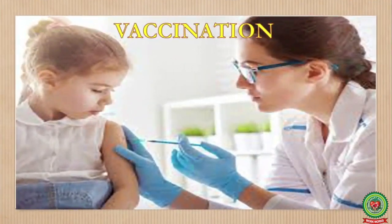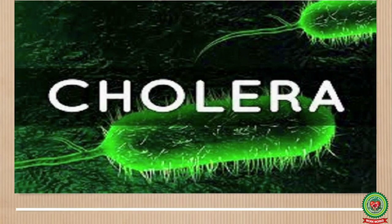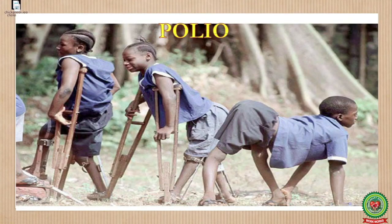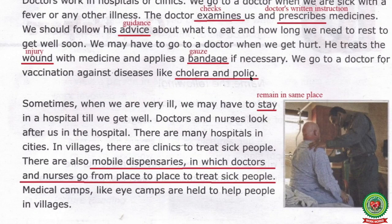We go to a doctor for vaccination against diseases like cholera and polio. Vaccination is a treatment which makes the body stronger against an infection. It is the preparation that gives immunity against diseases like cholera and polio. Cholera is an infectious disease caused by bacteria; it infects the small intestine. Polio is also an infectious disease caused by polio virus. This disease is preventable with polio vaccine. Why should we take vaccination? We should take vaccination to make the body stronger against an infection.